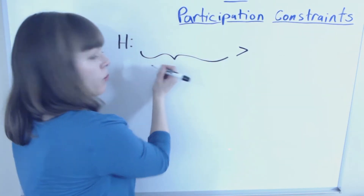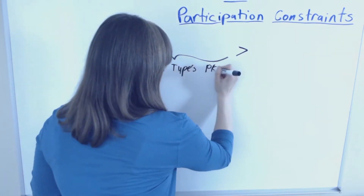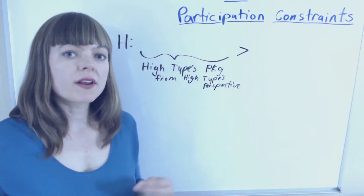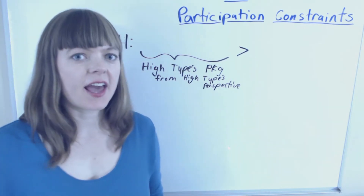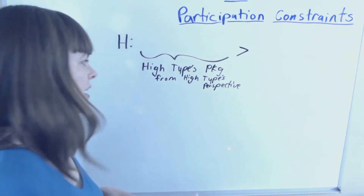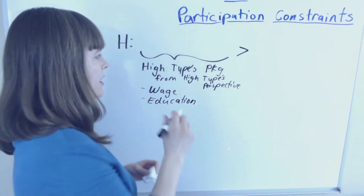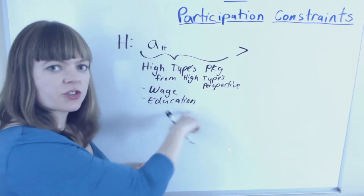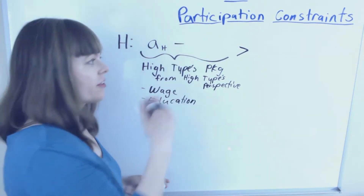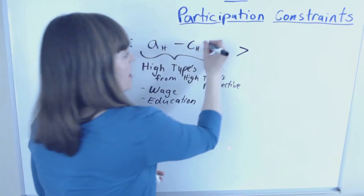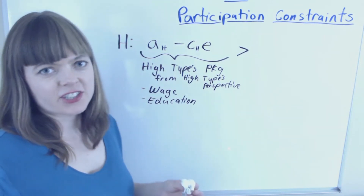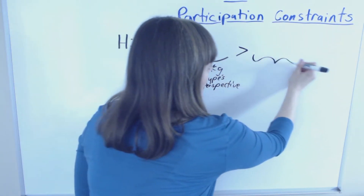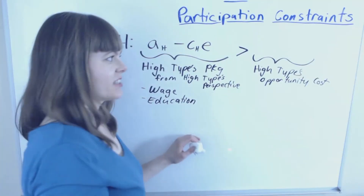On this side of the inequality we want the high type's package from the high type's perspective. The high type's package has two components: their wage (the higher wage) and the education they have to obtain to get that wage. So the wage is equal to the high type's productivity AH, and the education is a cost CH — the effort cost per year — times E, the years or semesters of education required. On the other side of the participation constraint is the high type's opportunity cost OH.